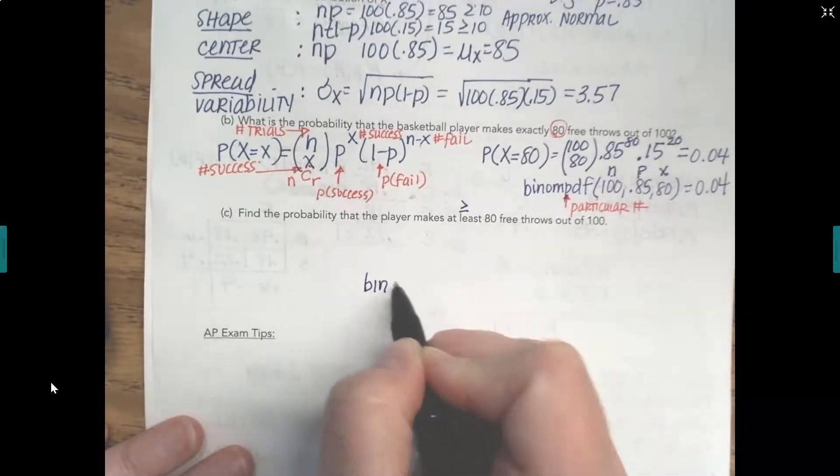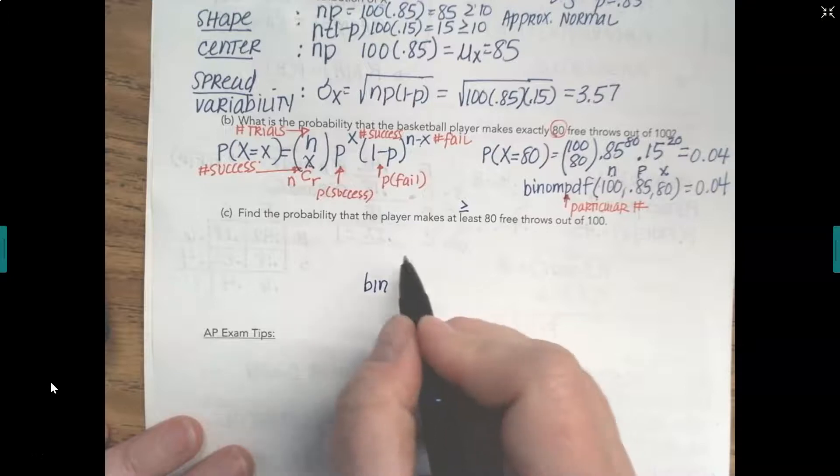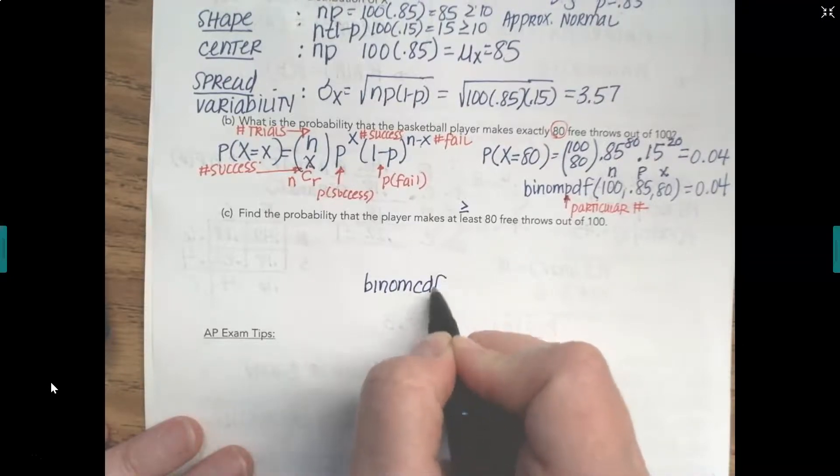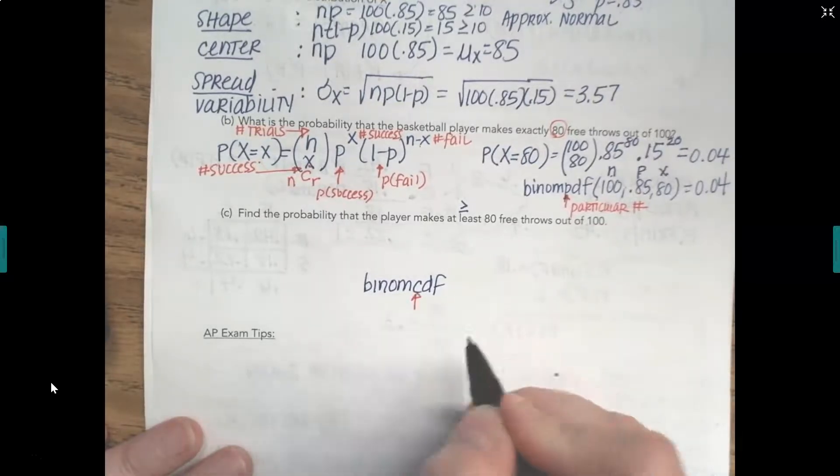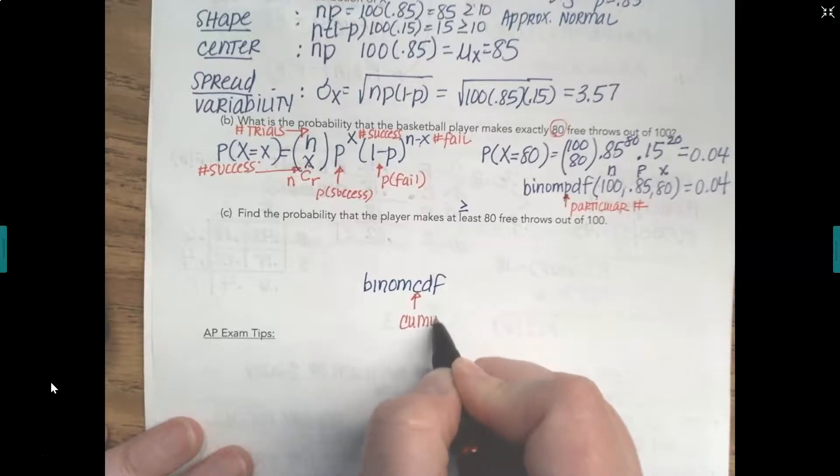So I'm going to just write down, leave yourself some room because we're going to go add some more stuff to this. So binomial CDF, because you have to identify the distribution, and C means cumulative.